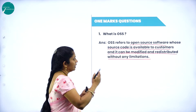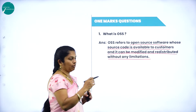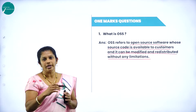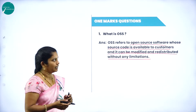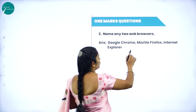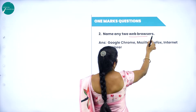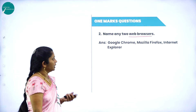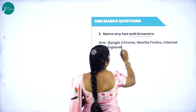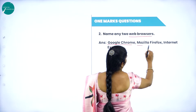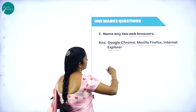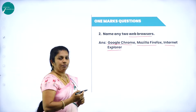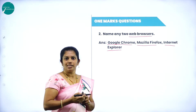The customer can modify the source code and redistribute it. Name any two web browsers — you can use Google Chrome, Mozilla Firefox, Internet Explorer. These are several types of web browsers we are using nowadays.